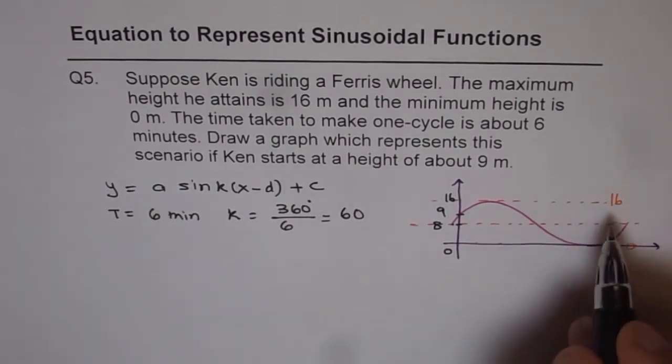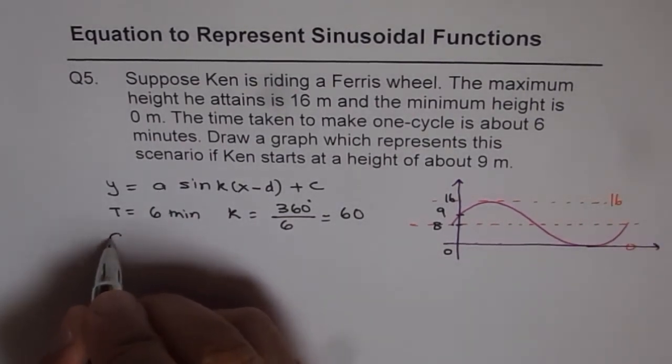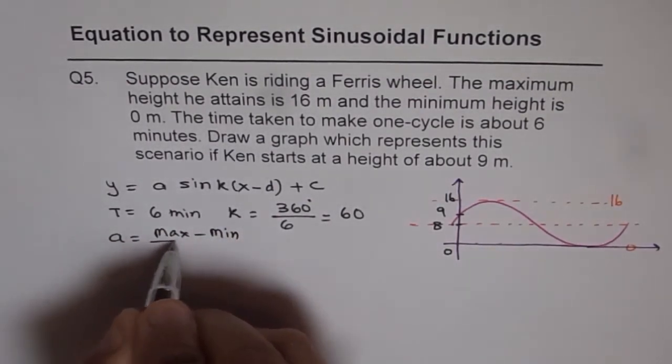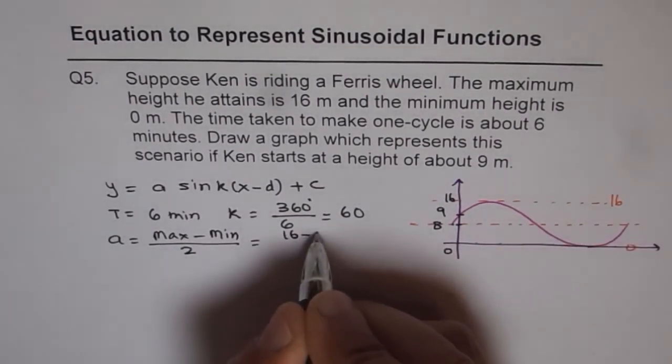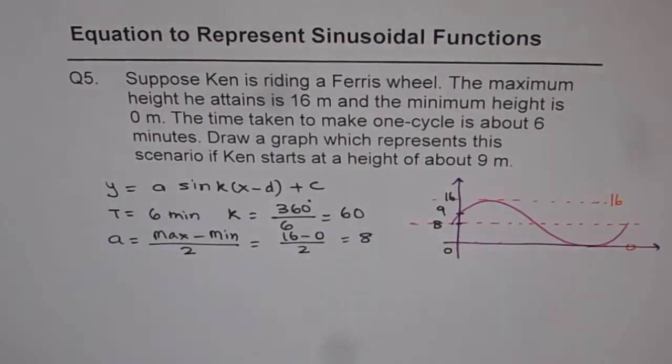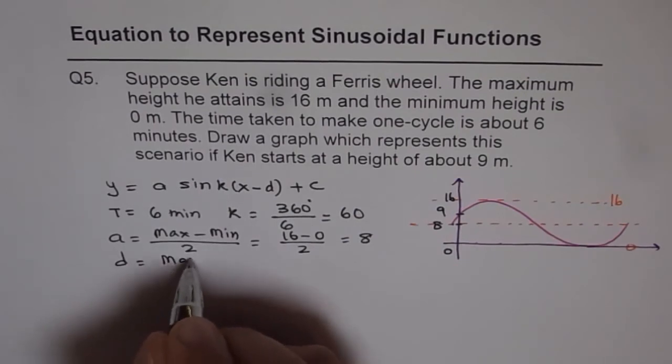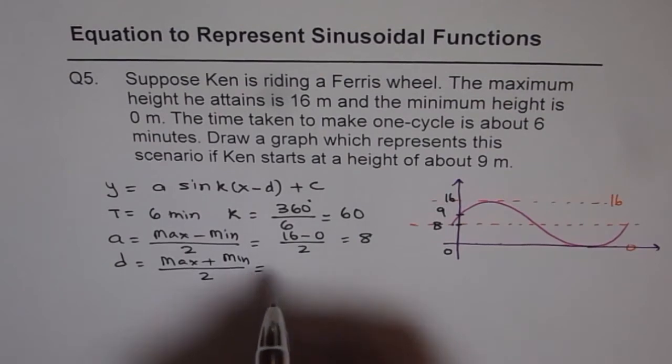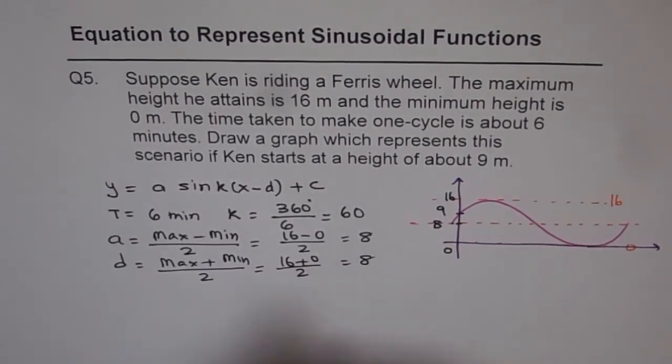Maximum and minimum is known to us and therefore we can find a. So a equals maximum minus minimum divided by 2. Maximum is 16. Minimum is 0. Divide by 2 is 8. How about c? The average value. C is maximum plus minimum divided by 2 and that is 16 plus 0 divided by 2 is also 8.